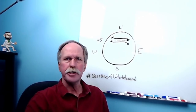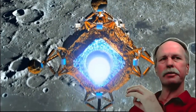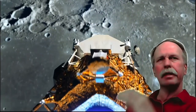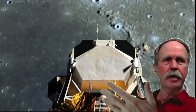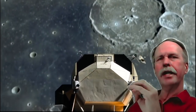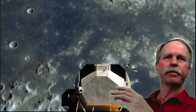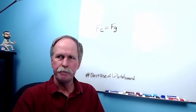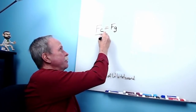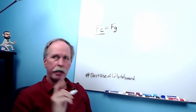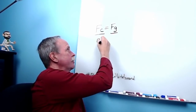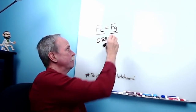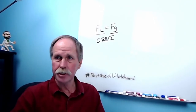To answer that question, we need to go to the moon. Here we are in lunar orbit, and the Eagle is firing its rocket engines in the opposite direction of its path of flight — it begins to descend. When your centrifugal force equals the force of gravity, you're in orbit. That's as simple as that.